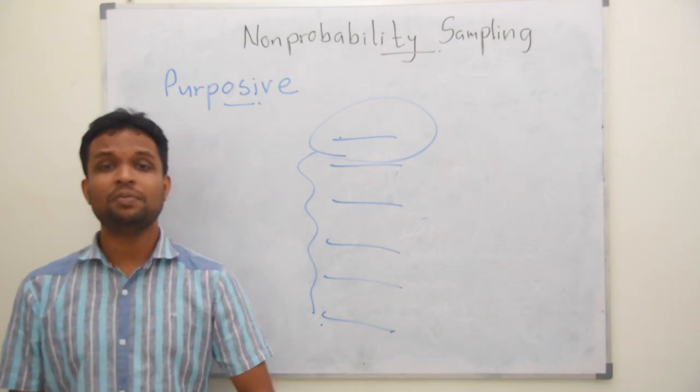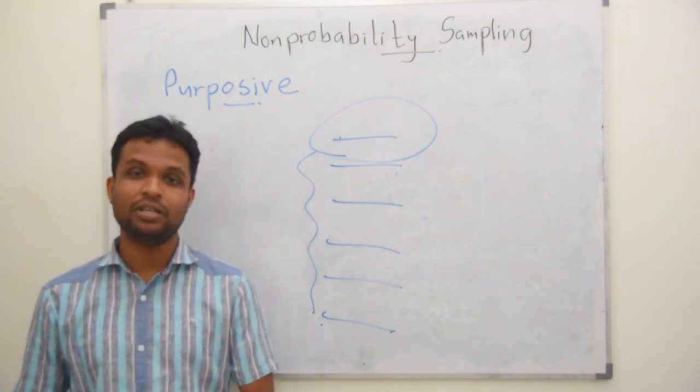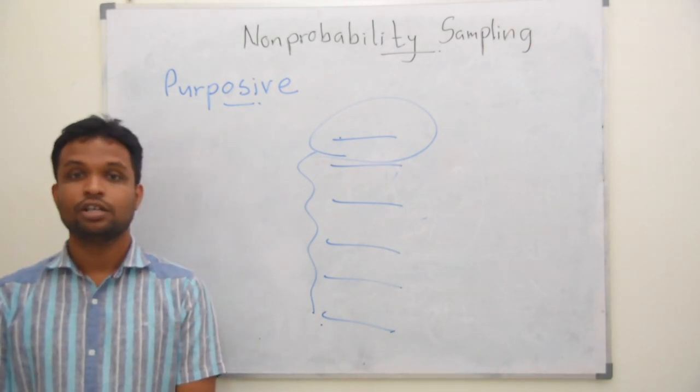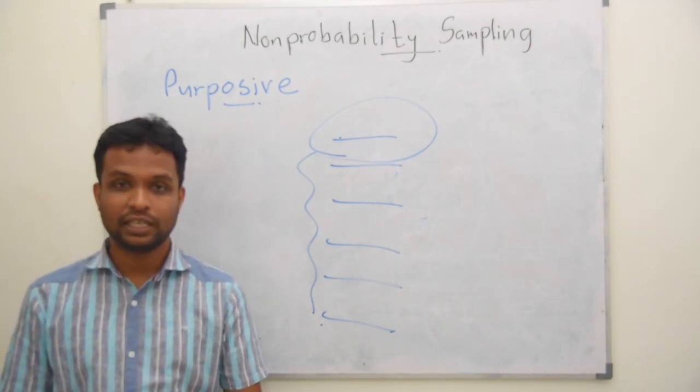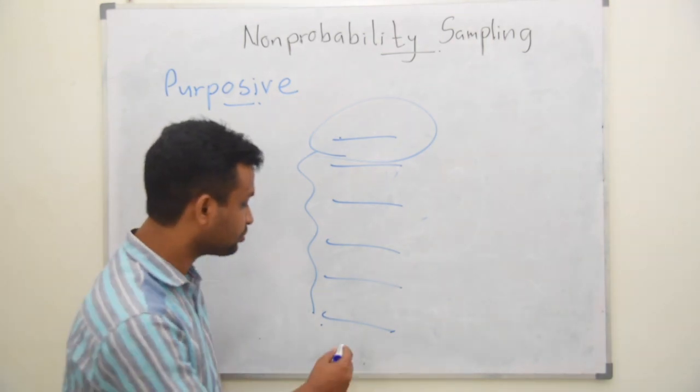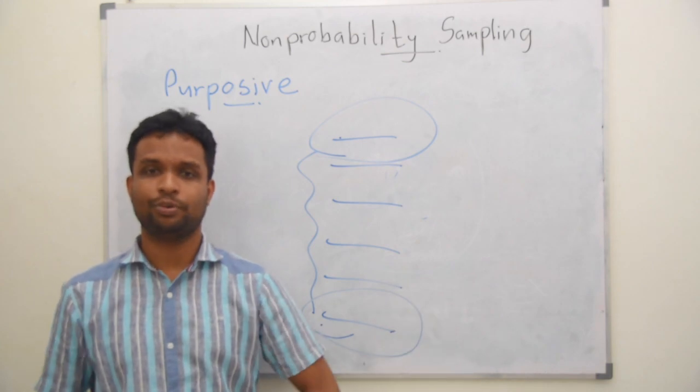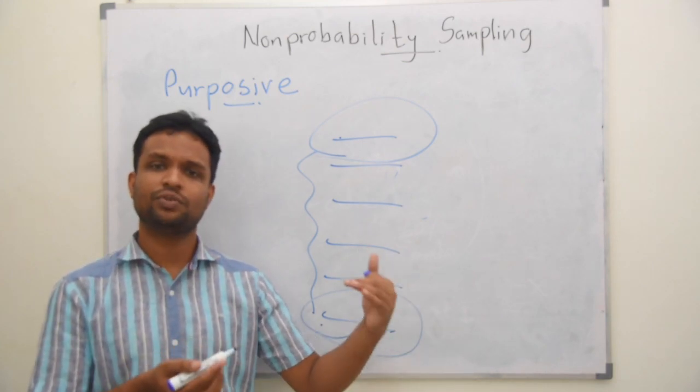Or else, you might be interested in what are the problems, why these students are weak in mathematics. To identify that thing, you have to select students who are weak in mathematics, and you can conduct research. You purposefully select the students with low marks.